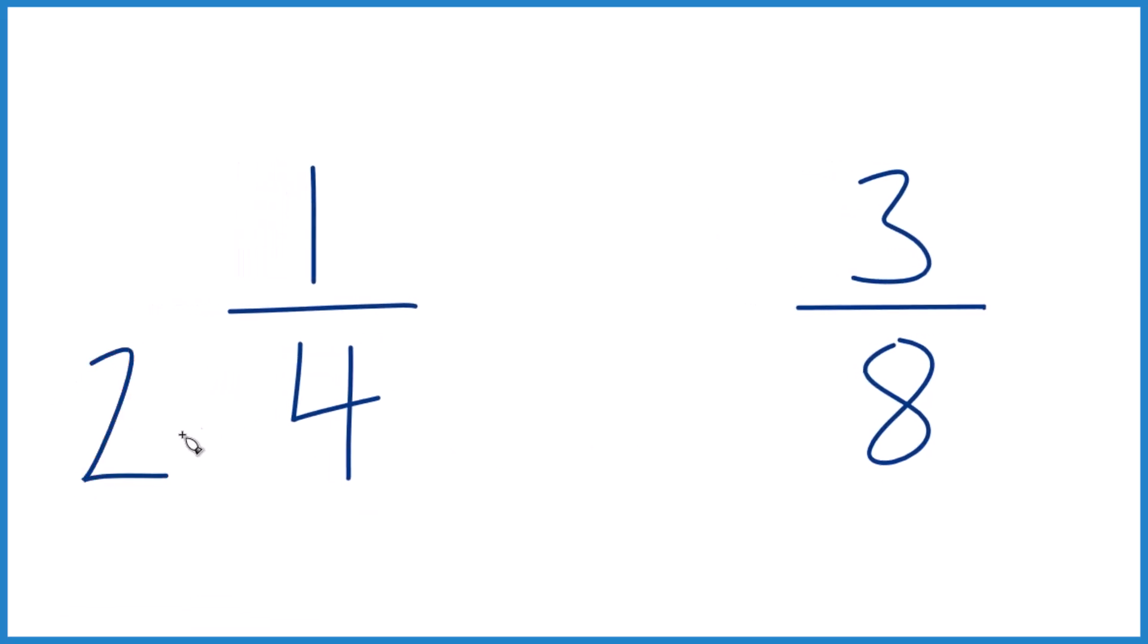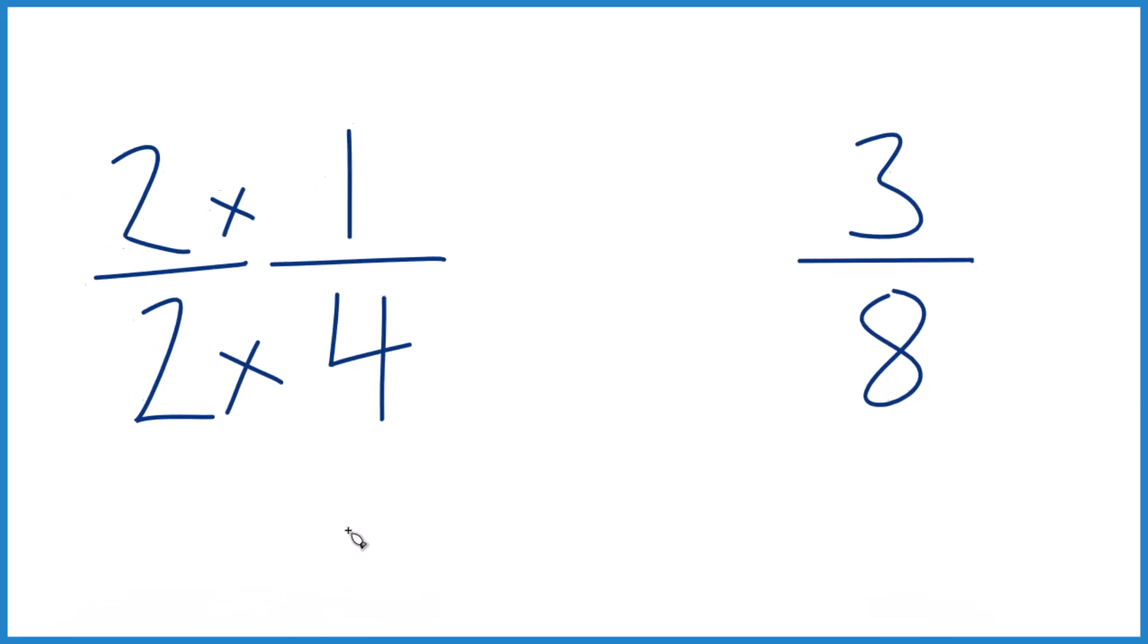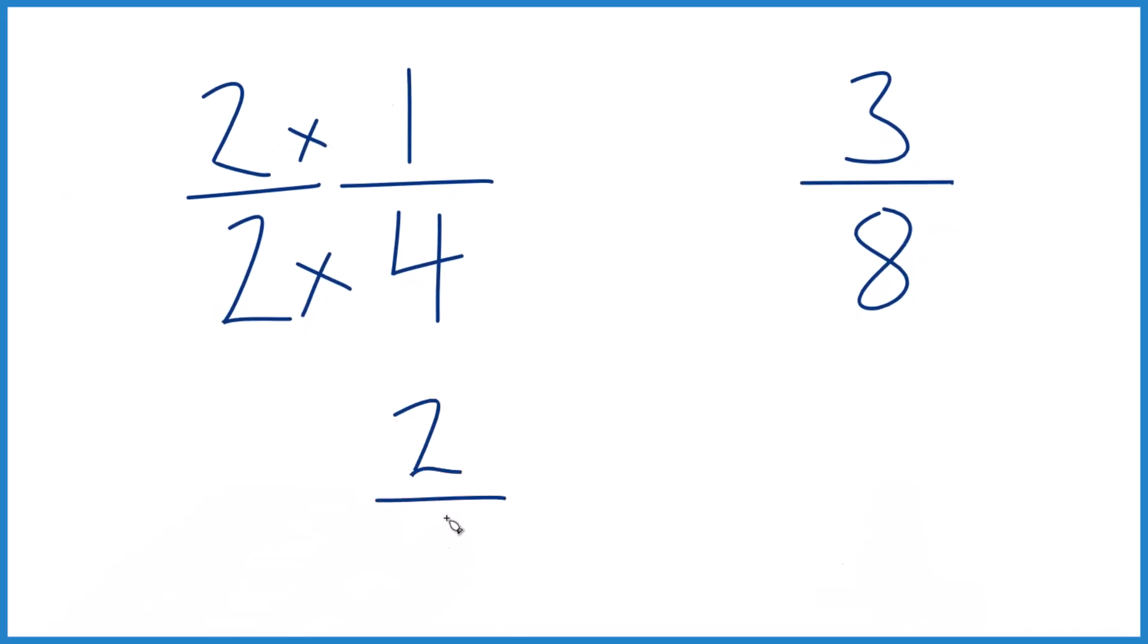So we could say two times four, and that would give us eight, just like we have eight over here. But we also need to do that to the numerator, because two over two, that's one, so we're just multiplying by one. Two times one is two, and two times four is eight.